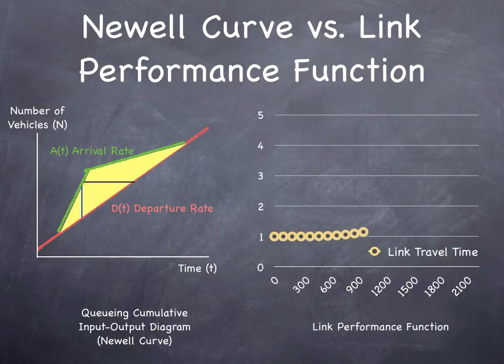We can compare the Newell curve with the link performance function. Note that the Newell curve is rotated from the link performance function, which has flow on the x-axis and time on the y-axis. The two curves come from different areas of transportation and so represent the data a bit differently, which has the potential to create confusion. But remember the x-axis is time and the y-axis is the number of vehicles that arrive, and all of the axes should be labeled.